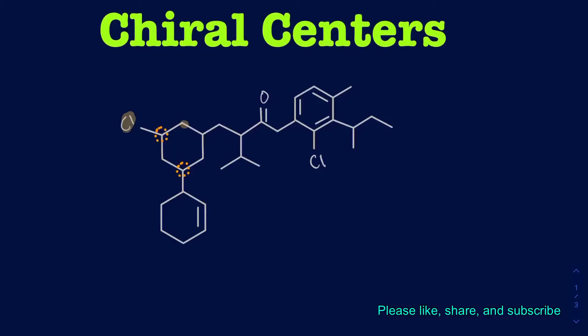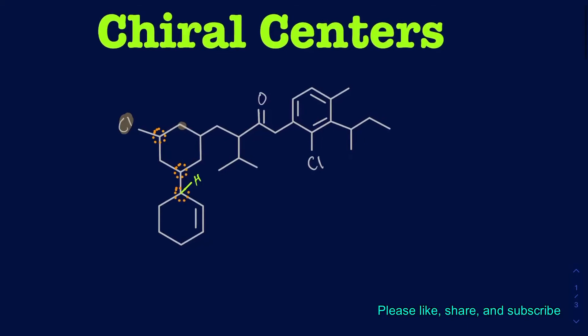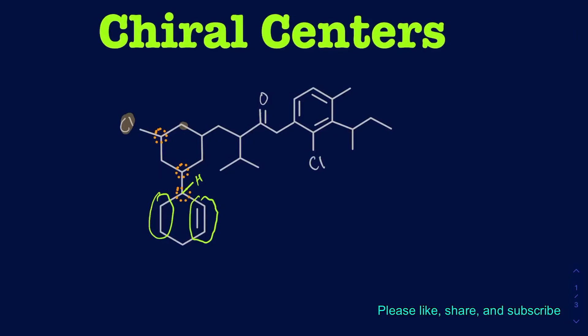The next one here should also be a chiral center because it has a hydrogen attached to it. If it's hard to see everything attached, make sure you draw out every single atom. You've got this top portion of the molecule with a kind of ring, and this big chunk of the molecule that's clearly different from what you have on the bottom. On the bottom side you can see that the left side and the right side are different — because there's a double bond, they are not the same, and as a result it's going to be chiral.